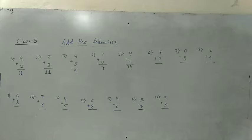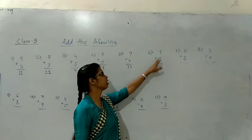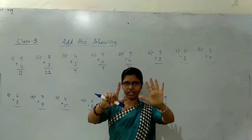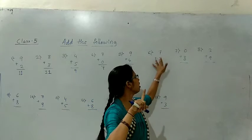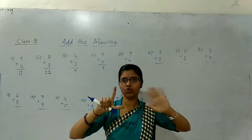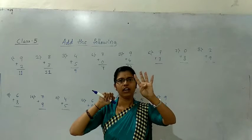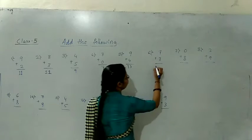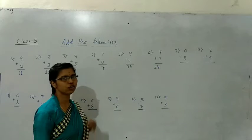Now see — 7 plus 7. You should hold 7 fingers. The upper number is 7, and the below number is also 7. You should count after 7: eight, nine, ten, eleven, twelve, thirteen, fourteen. How much? Fourteen. So 14 is the answer for that question.